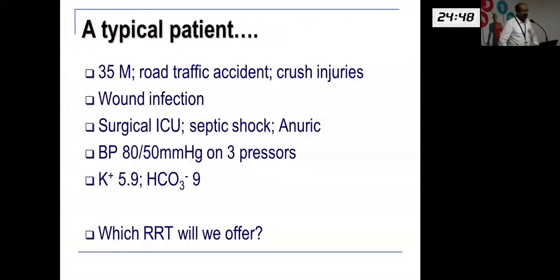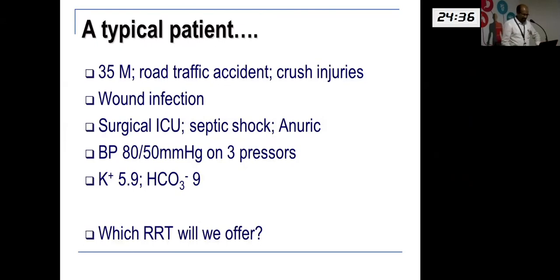A typical patient with acute kidney injury would be like this: a 35-year-old man who has come with RTA, crush injury, infection, sepsis, septic shock, anuric, hypertensive, hyperkalemic, hypokalemic, acidosis — and we get called for RRT.